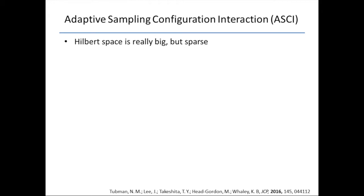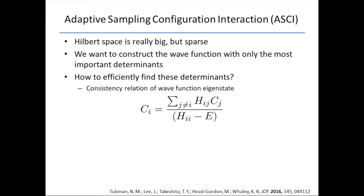The general idea behind the Adaptive Sampling Method is that the Hilbert space that you want to explore when you consider a really large active space is really big, but it's also really sparse. Most of the determinants that you might consider are going to be extremely low weight. They're not the important thing to focus on when you're building your wave function. The idea is you want to construct your wave function using only the most important determinants.